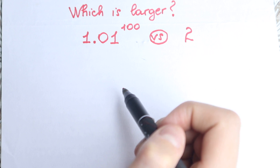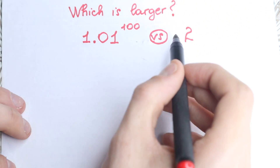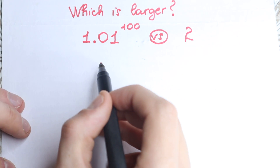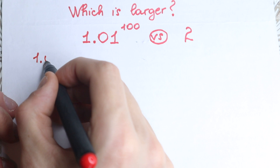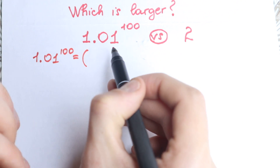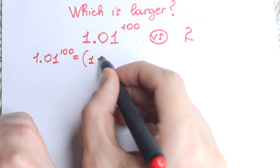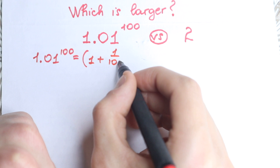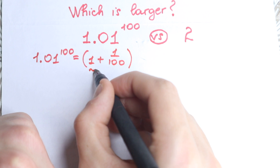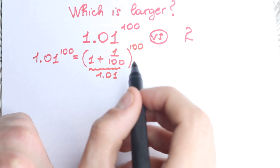Of course there are a lot of approaches and I'm going to show you a great one — maybe this will be easy for you to understand. We have 1.01 to the power 100. Let's write it in another way: because we have power 100, let's write 1.01 as 1 plus 1 over 100. We can do this because 1 over 100 is 0.01, and if we add it we get 1.01. And of course, to the power 100.